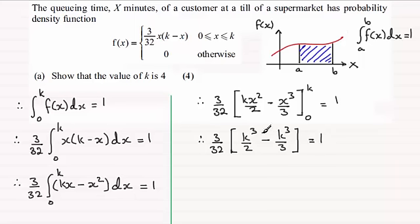Simplifying half k cubed minus a third k cubed gives us k cubed over 6. So you therefore got 3 over 32 multiplied with k cubed over 6, and that's going to equal 1. And I can see that you could cancel that 3 into the 6. Goes twice. And we've got 32 times 2, which is 64.